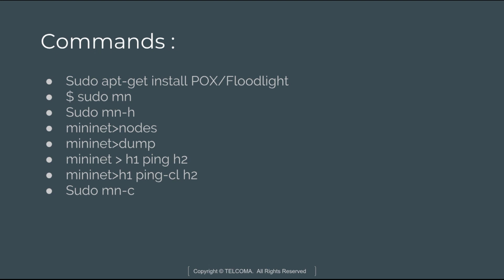The nodes command displays the nodes available for the current default Mininet topology. The dump command displays dump information about all the nodes available in the network. H1 ping h2 tests the connectivity between two hosts h1 and h2, and keeps checking connectivity until the command is stopped. The command mn h1 ping -c h2 checks the connection between hosts for one packet only. Finally, sudo mn -c is used to clear Mininet or previously used commands.